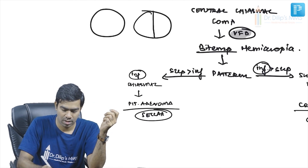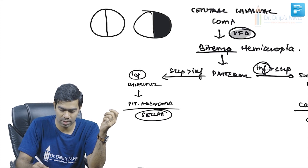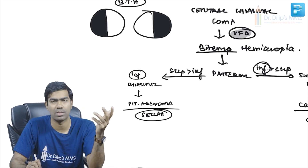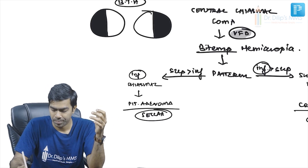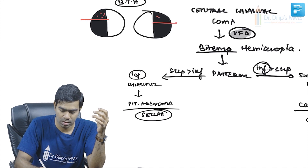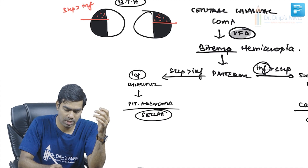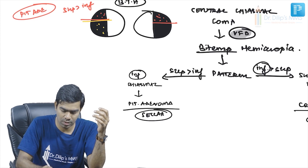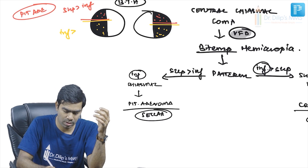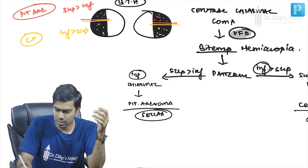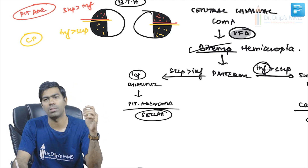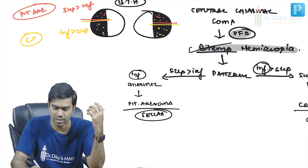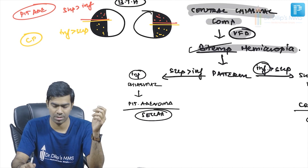To summarize visual field defects: both pituitary adenoma and craniopharyngioma cause bitemporal hemianopia, but the pattern differs. Superior loss greater than inferior suggests pituitary adenoma; inferior loss greater than superior suggests craniopharyngioma. Bitemporal hemianopia itself indicates central chiasmal compression — the key distinction is which portion is more affected.